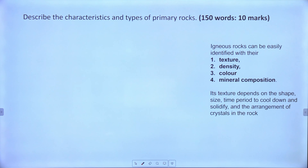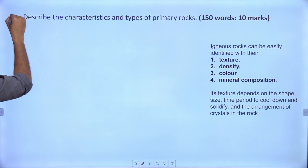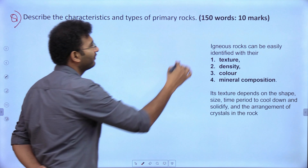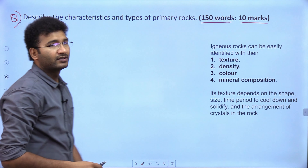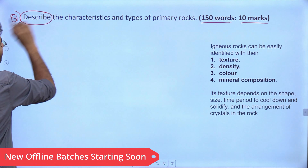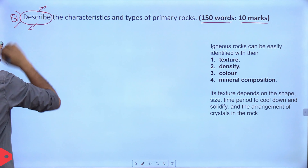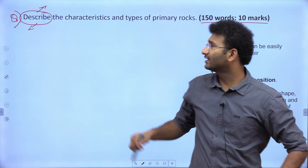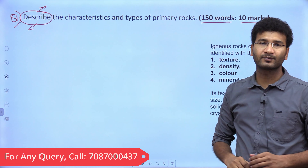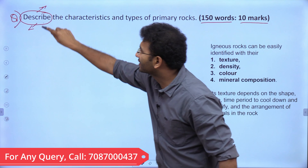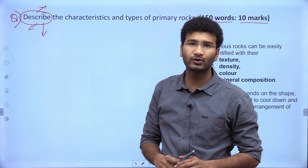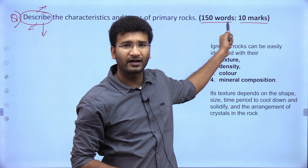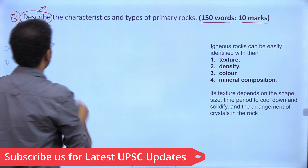The first question asks: 'Describe the characteristics and types of primary rocks' — 150 words, 10 marks. When looking at any question, first identify the keywords and directives. Here it says 'describe' — not 'discuss.' When asked to describe, you only need to describe the rock. It is a 10-marker, 150-word answer, so in the introduction you can define what a primary rock is.